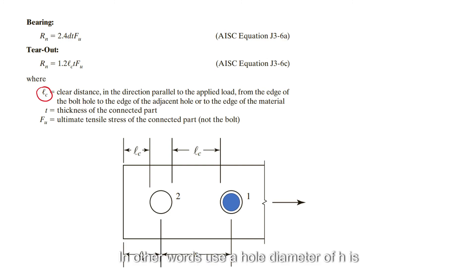In other words, use a hole diameter of H is equal to the bolt diameter D plus 1/16th of an inch for standard hole size, or 1/8 inches for oversized holes. But for the calculation of the effective area in tension, there is an extra deducted 1/16 inches required by the AISC for the limit state of tensile rupture.